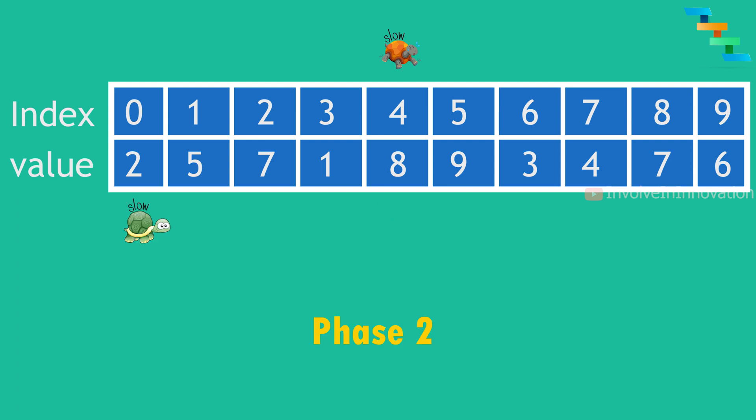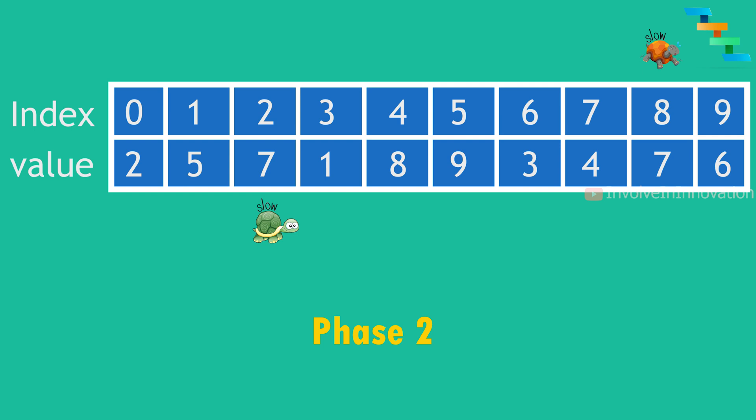In Phase 2, we remove the fast pointer and introduce a new slow pointer starting from index 0. The existing slow pointer remains at index 4. Now both slow pointers move one step per iteration. After iteration 1, the new slow pointer goes from index 0 to index 2 (value 7), and the old slow pointer goes from index 4 to index 8 (value 7). Both slow pointers now have the same value 7, so the duplicate value in this array is 7.